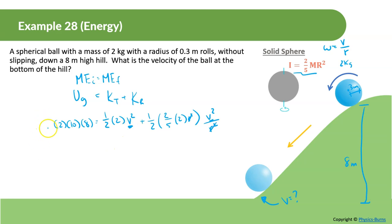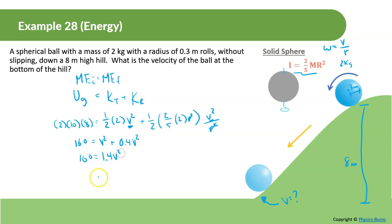Simplifying: 2 times 10 times 8 equals 160. Then 160 equals v squared times (1 + two-fifths) times one, giving 160 equals 1.4 v squared. Solving: 160 divided by 1.4, then square root, gives velocity equals 10.69 meters per second.